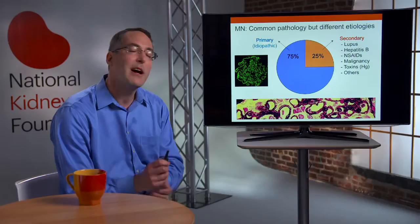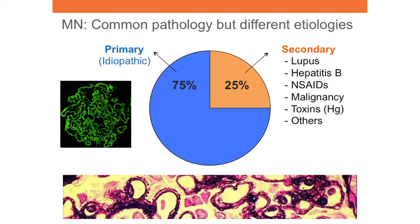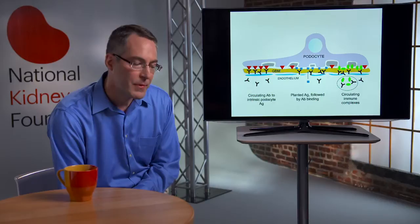Membranous nephropathy has the same histopathologic pattern in both primary and secondary forms, even though there are a number of different underlying causes. In developed countries such as the United States, three-quarters of membranous nephropathy is primary or idiopathic. The remaining 25% is secondary to systemic autoimmune diseases like lupus, infections like hepatitis B, drugs or toxins such as NSAIDs or mercury, and certain types of solid cancers.